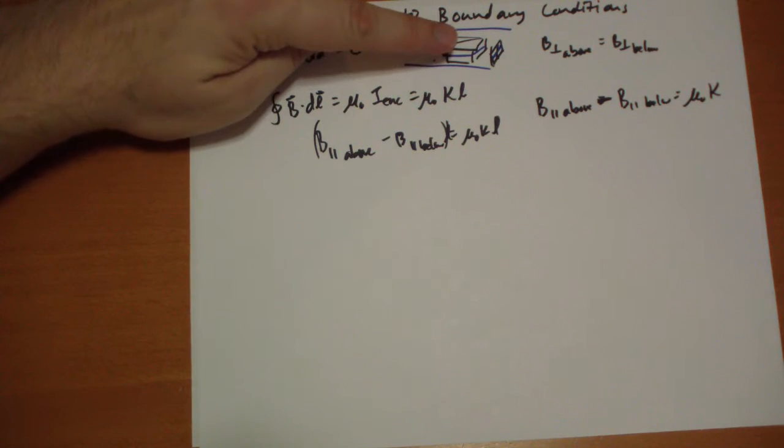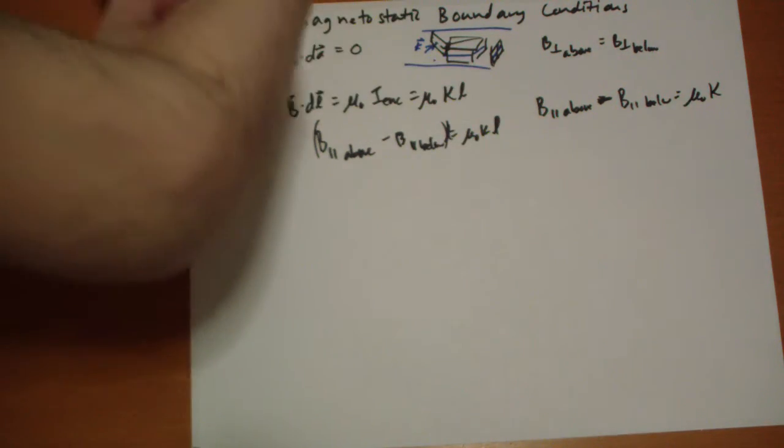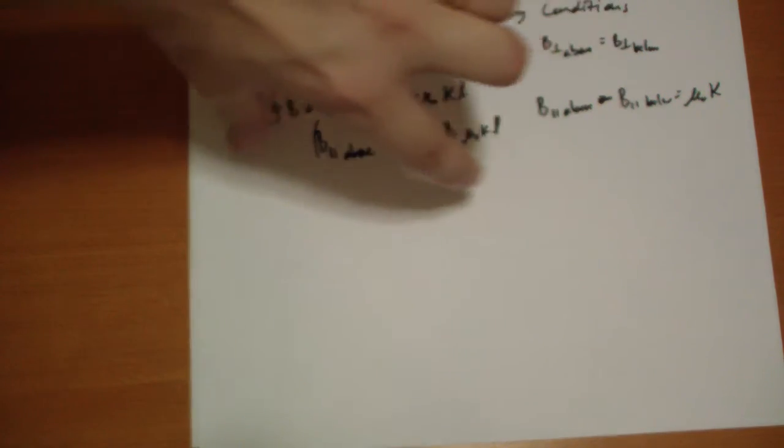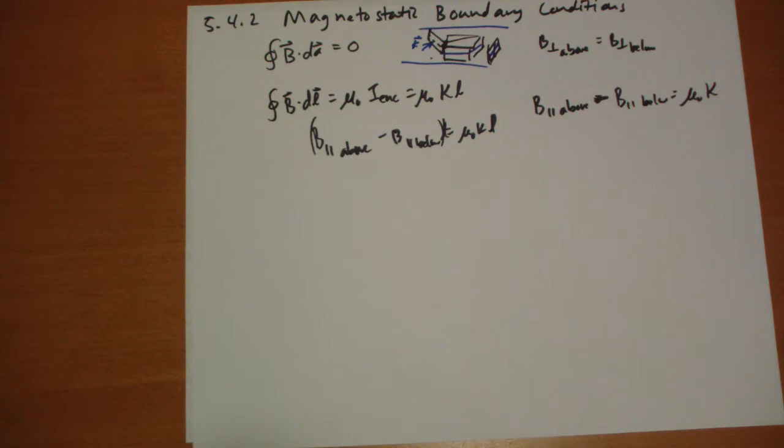So it has to make this jump. When you go above and below, the B field is going to go whoop, whoop. Or if it's like really long this way, it's going to get shorter by the amount of current that's passing through.